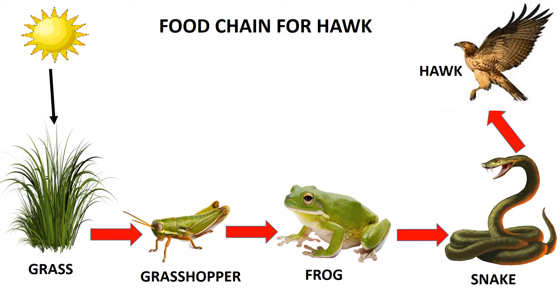The grasshopper eats grass, the frog eats the grasshopper, the snake eats the frog, and the hawk eats the snake.